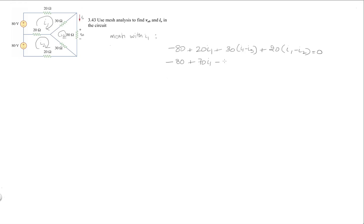So that's going to be minus 30I3. I'm going to write them in order: minus 20I2 minus 30I3 equals 0. Or I can rewrite this equation as 7I1 minus 2I2 minus 3I3 equals 8. So this is my first equation.